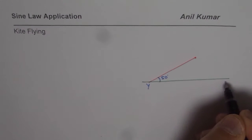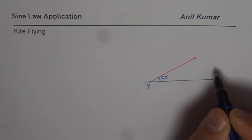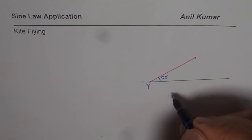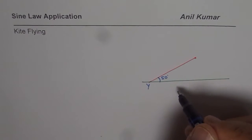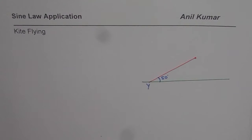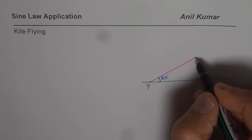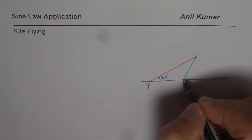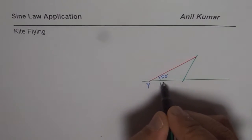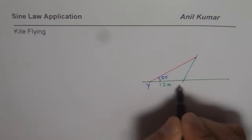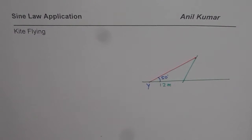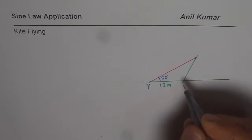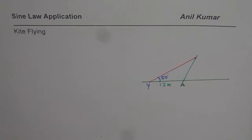From the other side, you watch two of your friends approaching who also want to share the experience of flying the kite. You notice that one of them is very close, about 12 meters from you. Let's call that friend A. The other friend who is following has an angle of elevation with the kite of around 35 degrees.